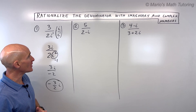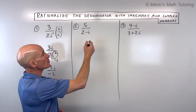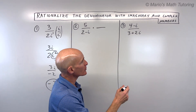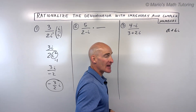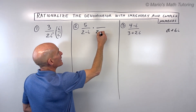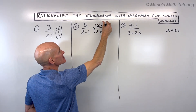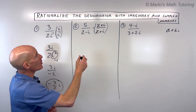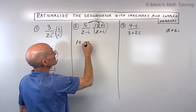For example number two, we've got five divided by two minus i. We don't want this i in the denominator. When it's a binomial, we're going to multiply by the complex conjugate. Remember, complex numbers in standard form are in the a plus bi form — if we change the sign between the real and the imaginary part, that's the conjugate. So if this is two minus i, I'm going to multiply by two plus i. Whatever I do to the denominator I also have to do to the numerator. So multiplying: five times two is ten, and five times i is five i.